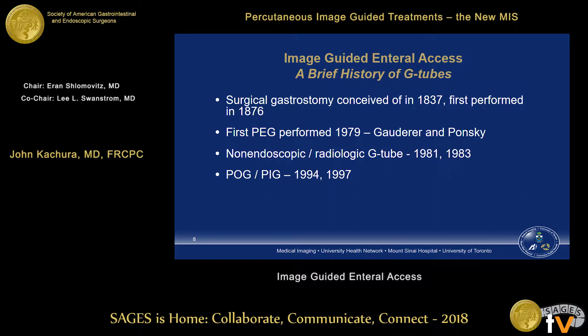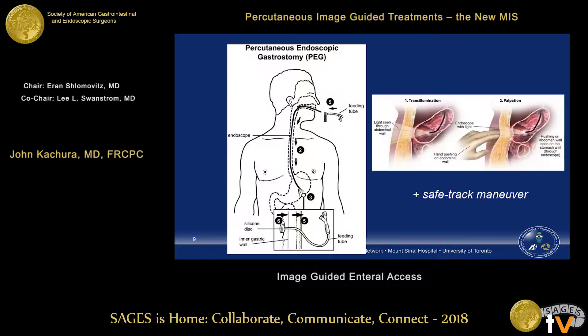A brief history is important to understand where we've been and where we've come. Surgical gastrostomy was the mainstay for over 100 years before Gauderer and Ponsky first performed the first PEG tube insertion in 1979, reported in 1980. A few years later, reports of non-endoscopic or radiologic G-tube insertions appeared — for example, our mentor CS Ho at Toronto General Hospital was one of the fathers of radiologic G-tube insertion, publishing his first case in 1983. Then a decade later, an interventional radiologist and a surgeon put in PEG tubes without endoscopy, calling it a POG or PIG tube.